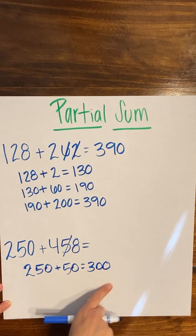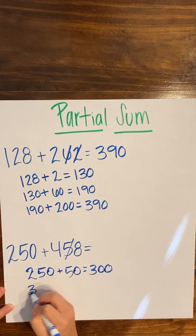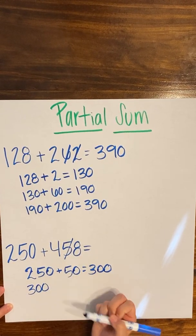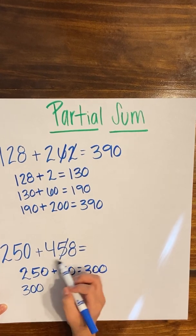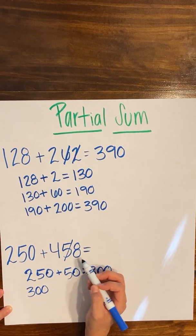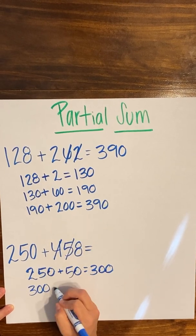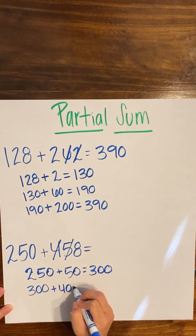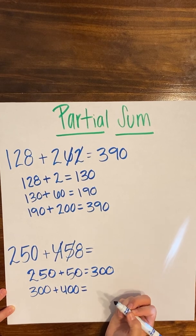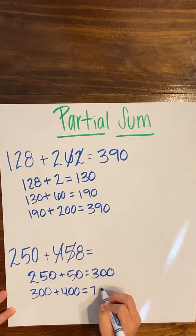And again, I'm going to move my new sum down because I've only added part of my second addend, and I'm going to think about what would be the easiest to solve next. And I'm thinking that I'm going to go ahead and take the four in the hundreds place, so 400, and add it to my 300 because those are pretty friendly numbers to solve. So 300 plus 400 would give me 700.